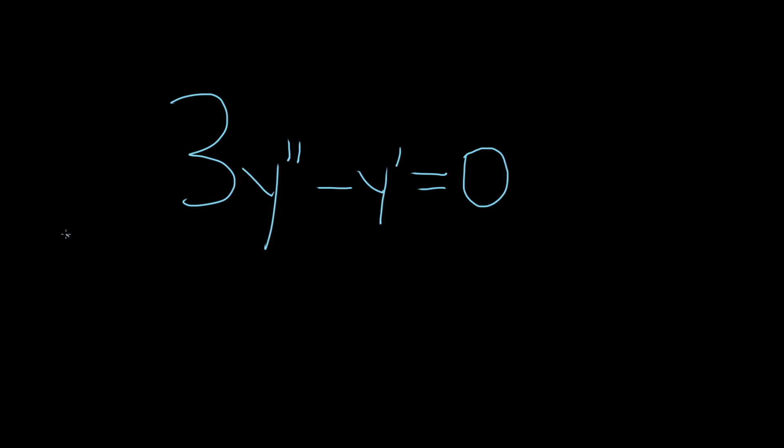To do a problem like this, the first step is to write down what's called the characteristic equation or the auxiliary equation. Basically, you just keep the constant, so it's 3,